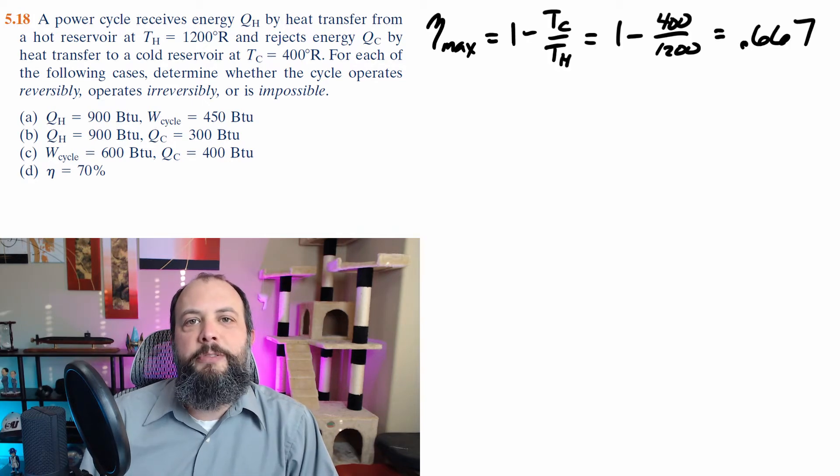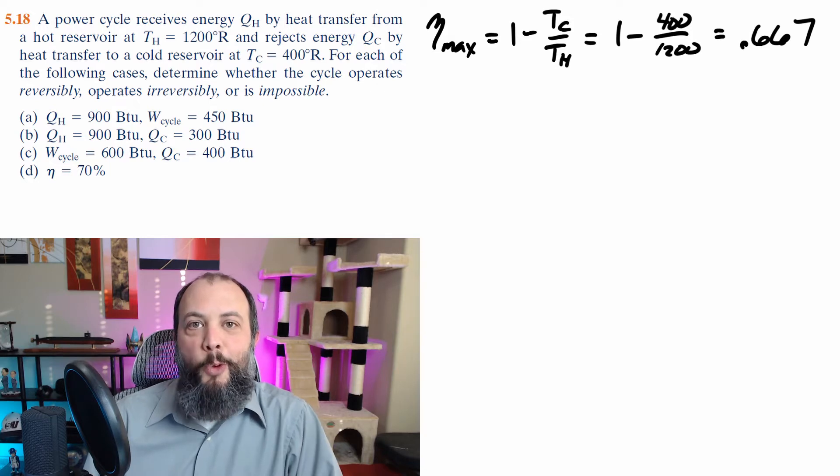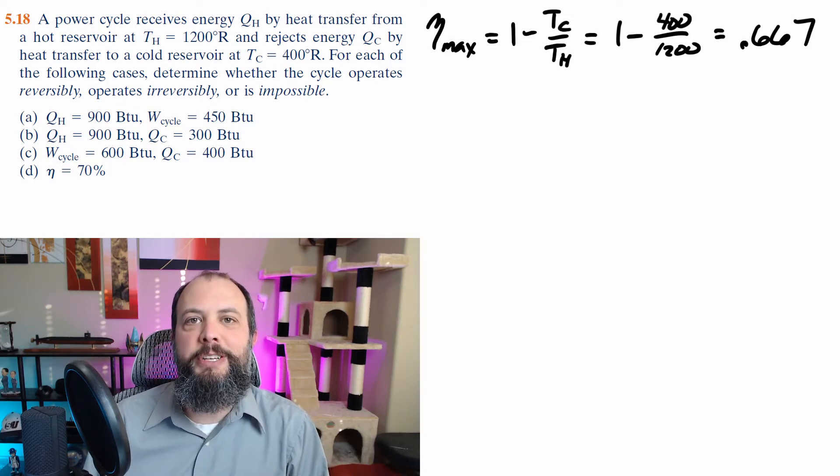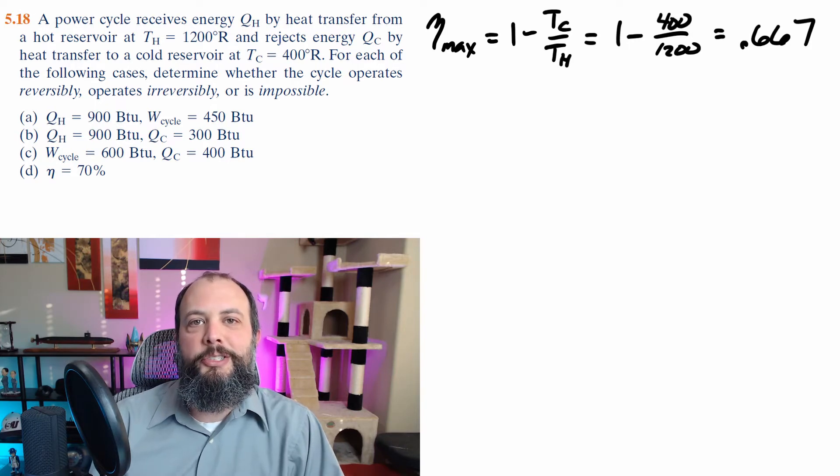First step in evaluating whether or not each of these problems are going to be irreversible, reversible, or impossible is going to be to calculate what is the maximum possible efficiency for this system if it were a perfect, no irreversibilities Carnot heat engine. And in this case, we get 66.7%. So now we just need to look at each of these four cases and determine if they are at this threshold, above, or below.